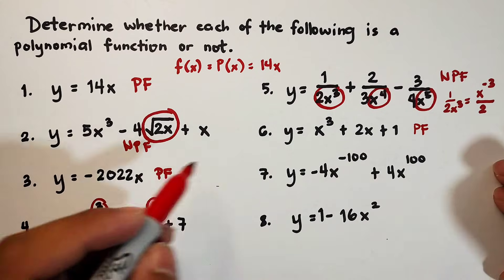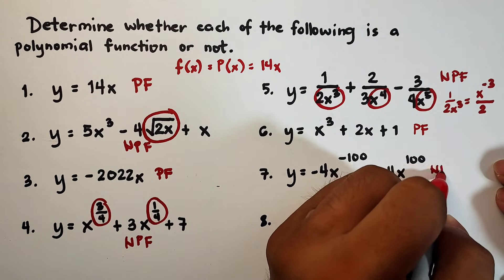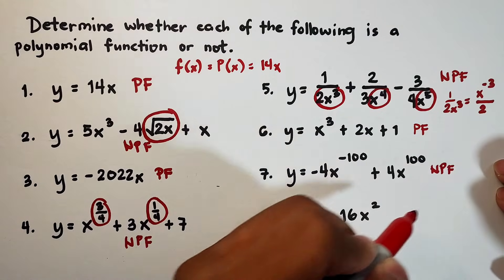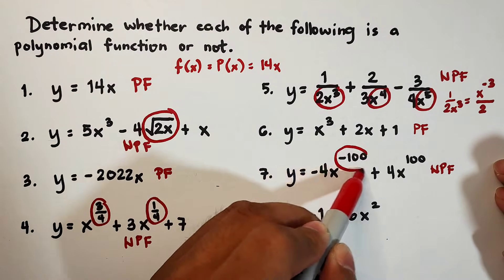Number 7. Definitely an example of not polynomial function. Why? We have negative exponent.